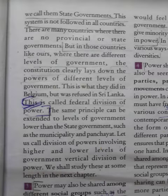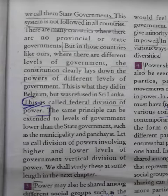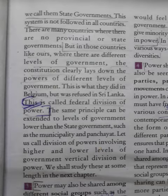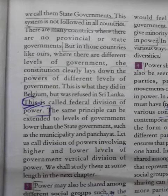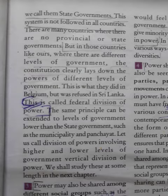So this is the second form of power sharing — powers divided between the union government and the state government — and this is known as the vertical sharing of power, or federal division of power. There are many countries in the world which do not have state governments, but in our country these different levels of government exist, and it is clearly written in the constitution what powers are given to the union government and what to state governments. This power sharing was done in Belgium, but Sri Lanka refused to have this sharing of power — so there was a problem.